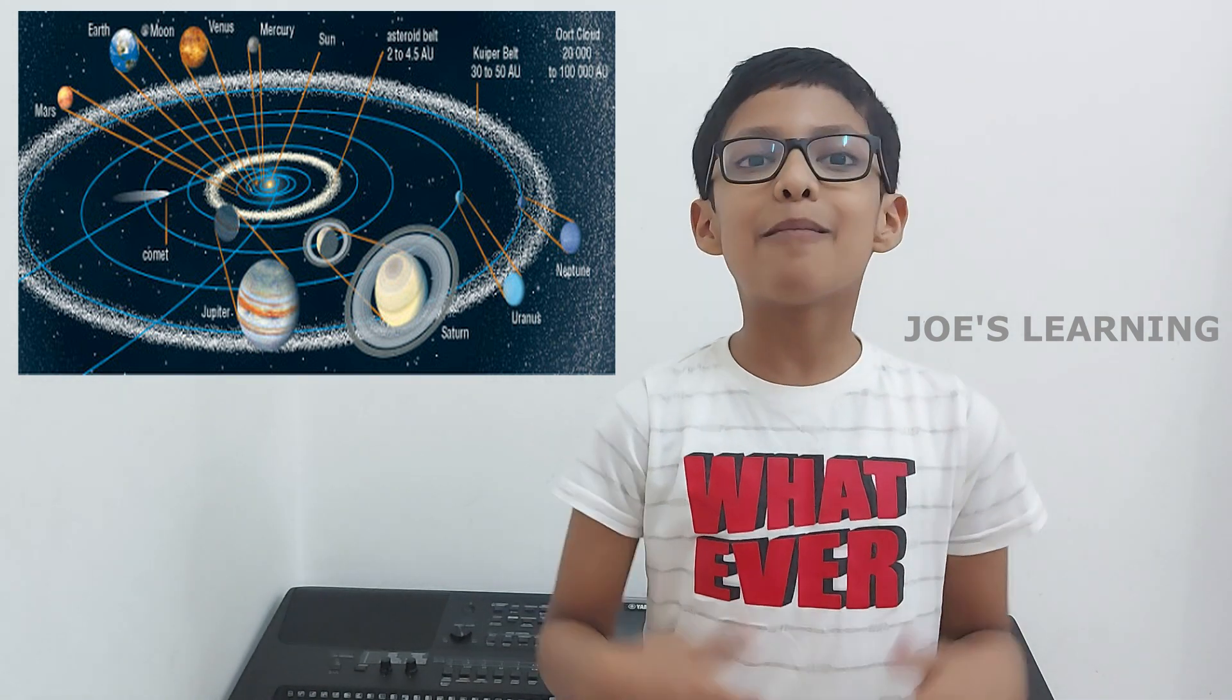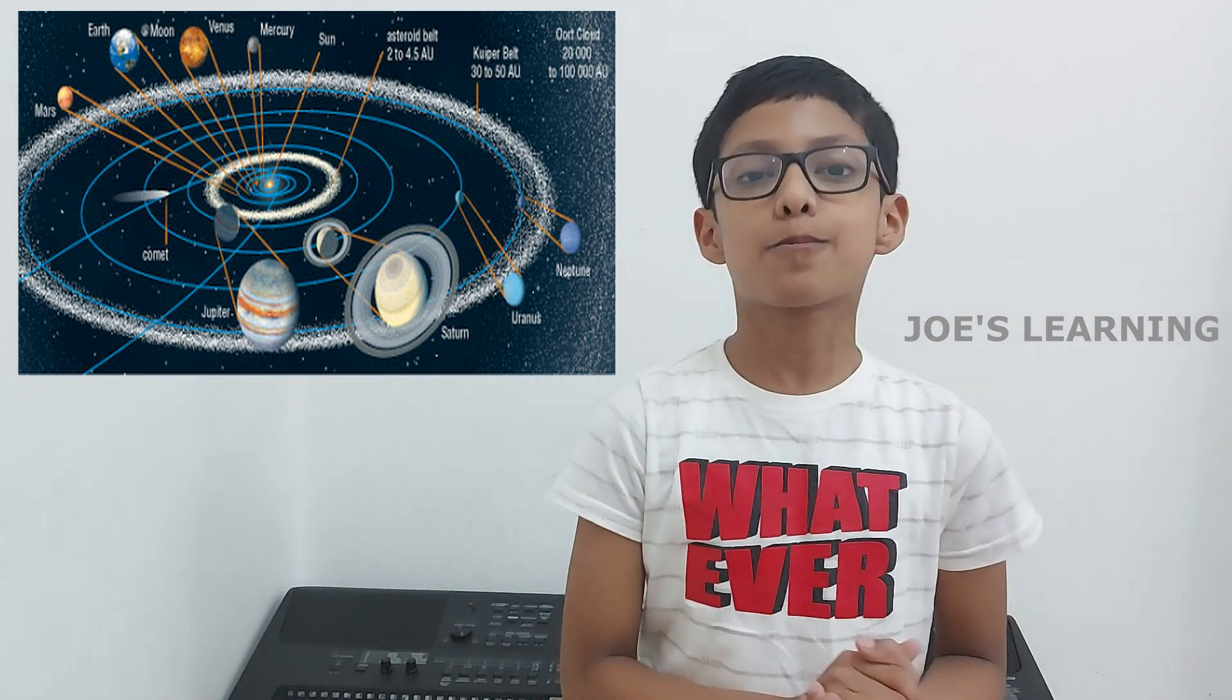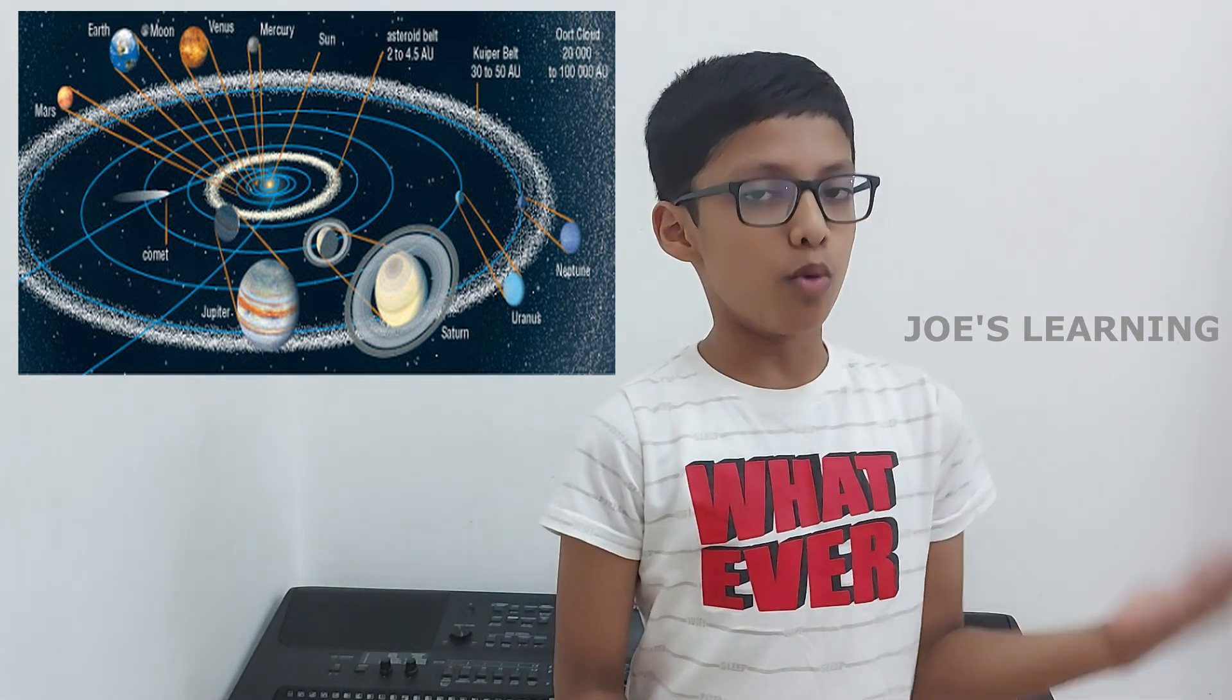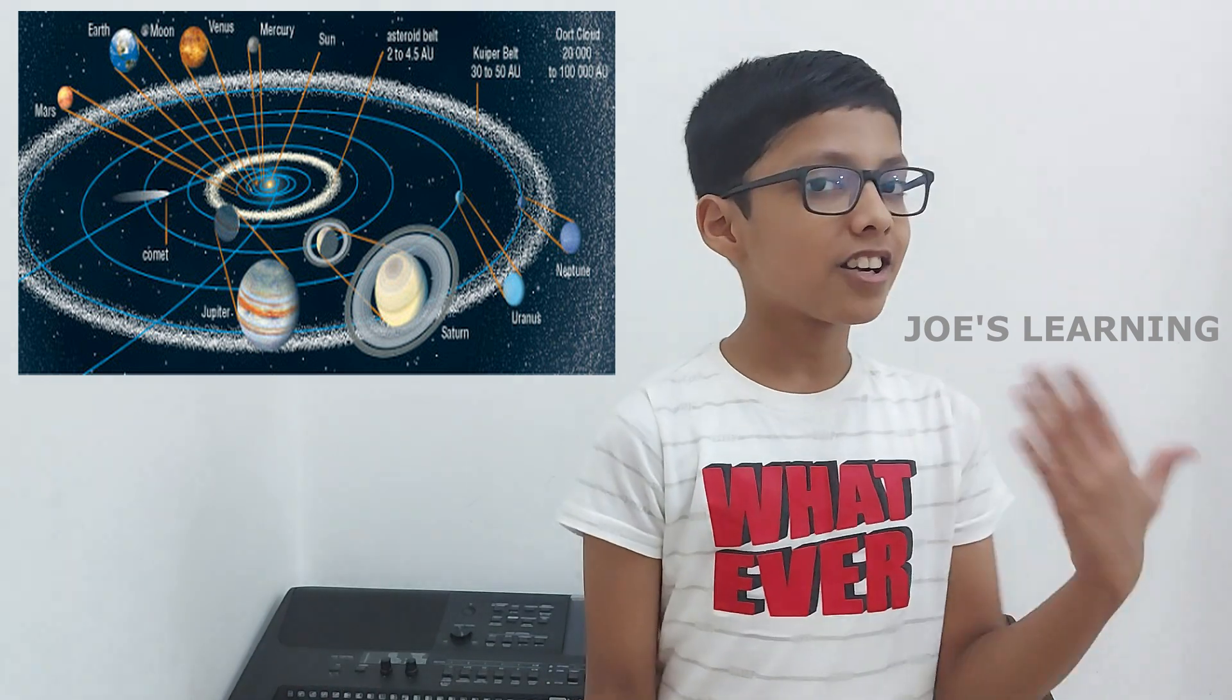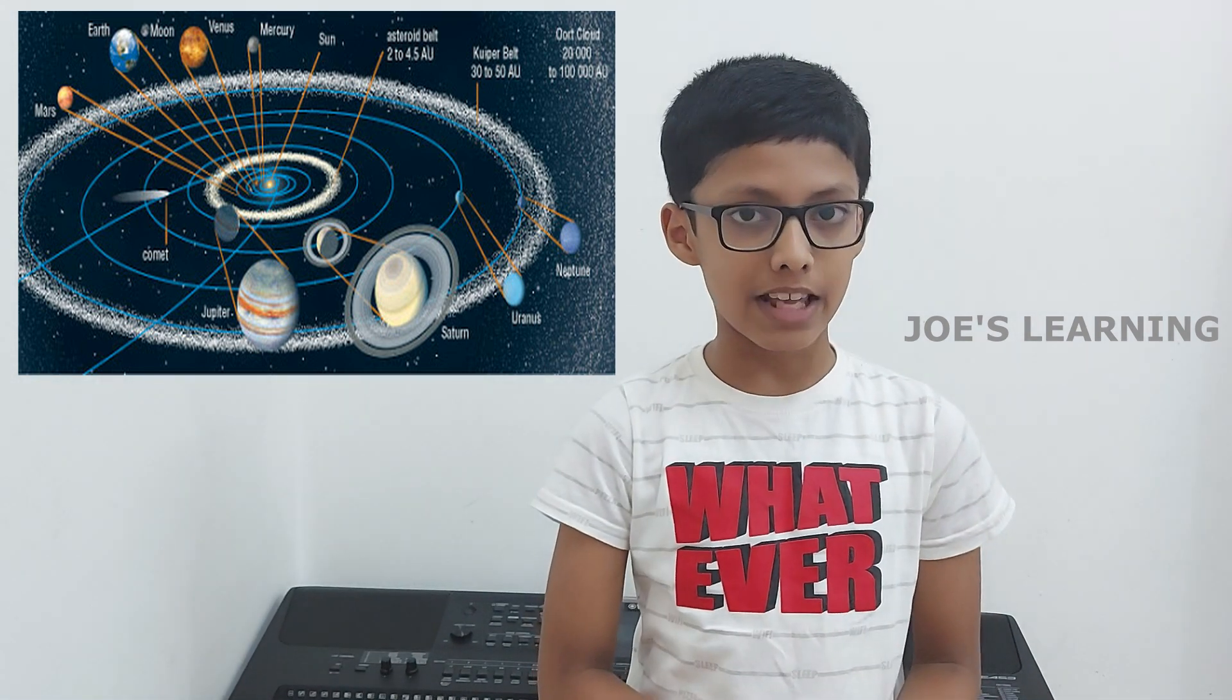Also, there are millions of other smaller bodies in space. They are the moons, asteroids, comets, meteors, and meteoroids.